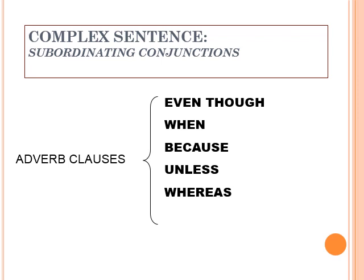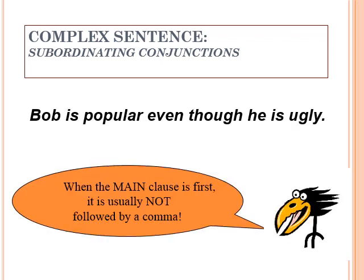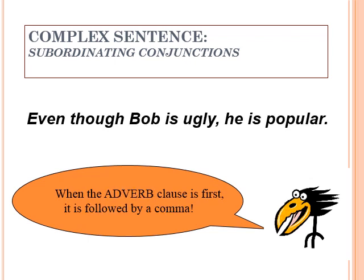Independent and dependent clauses are joined with subordinating conjunctions such as: even though, when, because, unless, whereas — and these subordinating conjunctions are added to adverb clauses. When the main clause comes first, it is usually not followed by a comma. But when the adverb clause comes first, it is followed by a comma — for example, 'Even though Bob is ugly, he is popular.'